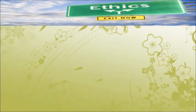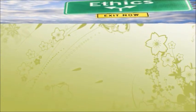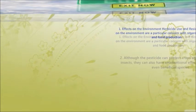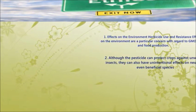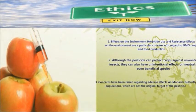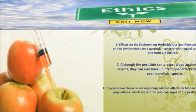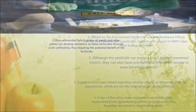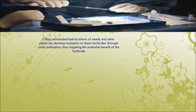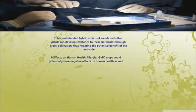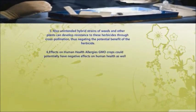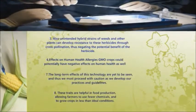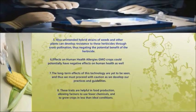There are a few ethical issues related to micropropagation. First, herbicide use and resistance effects on the environment are a particular concern with regard to GMO crops and food production. Although pesticides can protect crops against unwanted insects, they can also have unintentional effects on neutral or beneficial species. Concerns have been raised regarding adverse effects on the Monarch butterfly population, which is not the original target of the pesticide. Moreover, Roundup-ready soybean crops have already been implemented into agricultural practices, possibly conferring Roundup resistance to neighbouring plants.